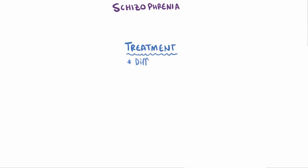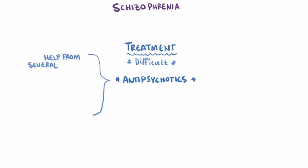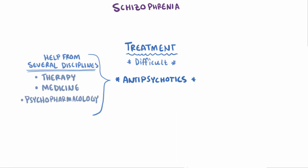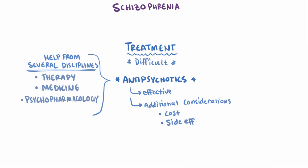Treating schizophrenia can be really tricky, and antipsychotic medications are often used. But it's super important to combine the efforts of several clinicians and health professionals, including those in therapy or counseling, medicine, and psychopharmacology. Antipsychotics can be very effective at reducing symptoms, but they often come with additional considerations like cost and the potential for unwanted side effects, including tolerance, dependence, and withdrawal.